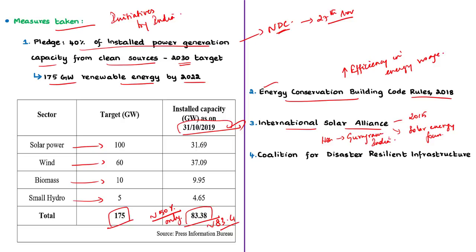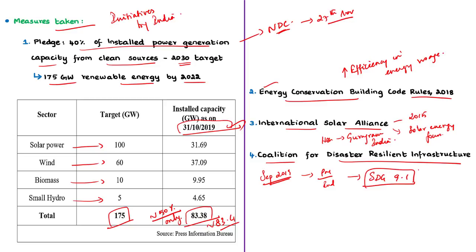India also launched the Coalition for Disaster Resilient Infrastructure in September 2019 at the United Nations Secretary-General's Climate Action Summit in New York, formed in line with SDG target 9.1 which commits to developing sustainable and resilient infrastructure. To summarize this editorial, we saw about the Emissions Gap Report, initiatives taken by developed countries like the United Kingdom and European Union, what India needs to do to reduce emissions, and some measures India has taken in terms of renewable energy and reducing emissions.